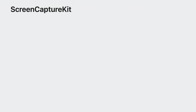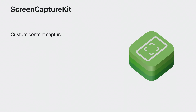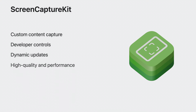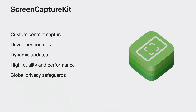Screen Capture Kit was introduced in macOS 12.3 to help you create your application's screen sharing experience. It provides APIs that let you customize the content you want to share with controls that fit your application's needs, all of which can be applied dynamically to your streams. The framework delivers high quality content with a focus on performance, going up to the native resolution and frame rate of your display, all while having privacy in mind with global safeguards.